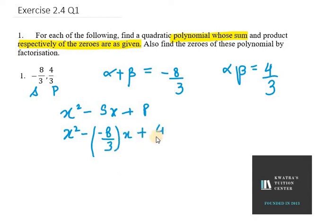Now what we need to do is take LCM of this polynomial. When we take LCM it will be 3, so we get the polynomial as 3x square plus 8x plus 4. This is my polynomial and I will name it as f(x). Now in the second part it says also find the zeros of the polynomial by factorization.